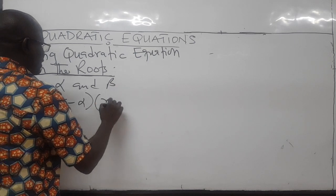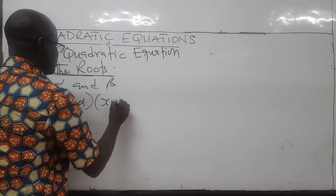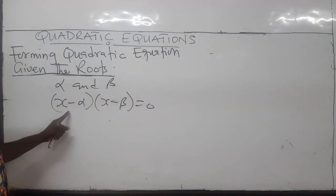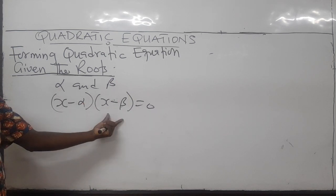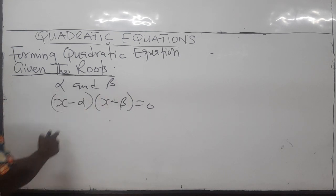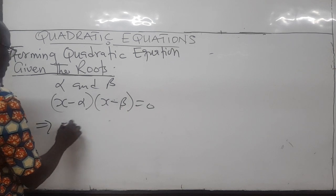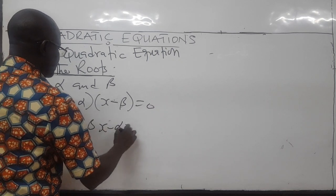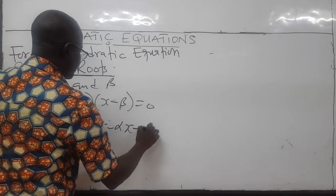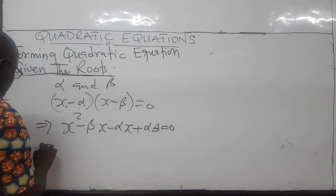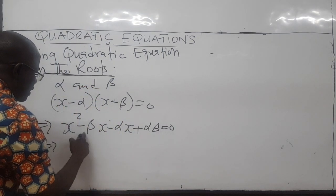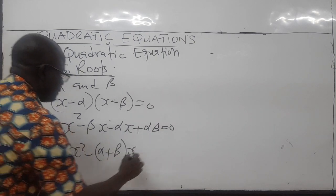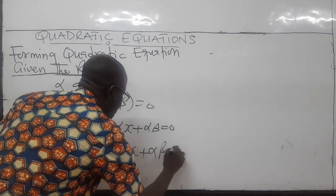X minus alpha, and then X minus beta is equal to zero. This is the root because X minus alpha equals zero will give you alpha, and this equals zero will also give you beta. So these are the roots. If you expand this, you are going to have X squared, then minus beta X, minus alpha X, plus alpha beta, equal to zero.